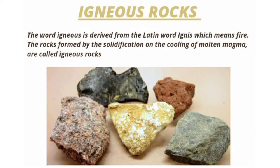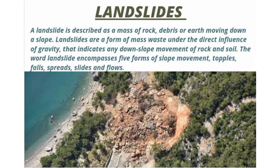Landslides. A landslide is described as a mass of rocks, debris or earth moving down a slope. Landslides are a form of mass wasting under the direct influence of gravity that indicates any downslope movement of rock and soil.